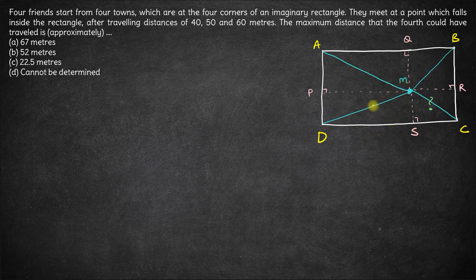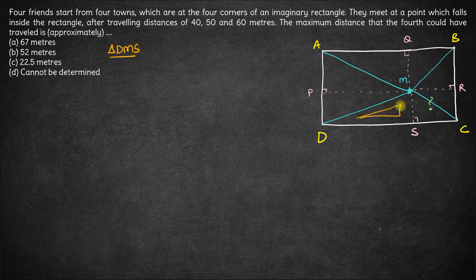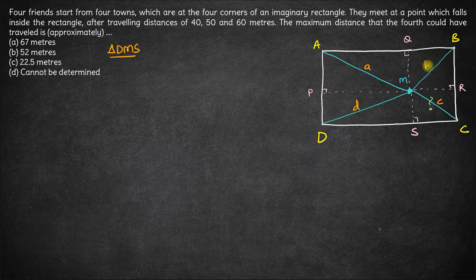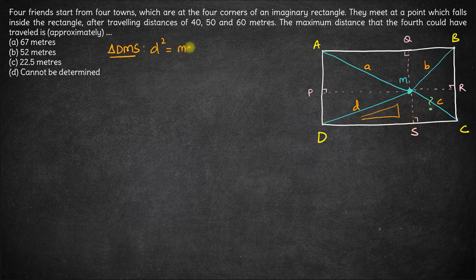Now let's consider a few triangles one by one. First, triangle DMS. Let the distances be variables: this is A, this is D, this distance is C, and this distance is B. In triangle DMS, D is the hypotenuse, so we have D² = MS² + SD².